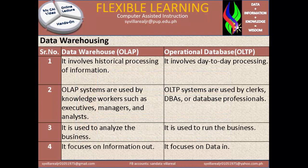Number 1: the difference between the two. Data Warehouse OLAP involves historical processing of information. While Operational Database OLTP — OLTP identifies as Online Transaction Processing — it is for the transaction and involves day-to-day processing, because daily we have transactions.